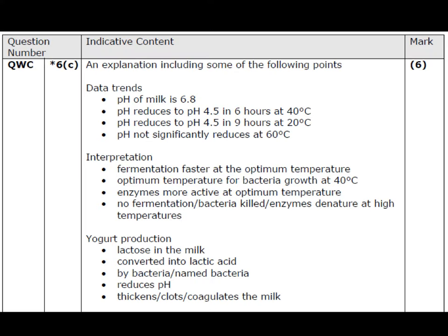We need to discuss data trends, interpretation, and yoghurt production. The starting pH is 6.8, and the pH reduces to pH 4.5 in 6 hours at 40°C, in 9 hours at 20°C, and it doesn't change at 60°C. Fermentation is therefore faster at the optimum temperature of 40°C — enzymes are more active at this optimum, meaning activity is higher. At 60°C there is no fermentation because the bacteria have been killed and enzymes denatured. We link this to yoghurt production: lactose in the milk is converted into lactic acid by lactobacillus bacteria. The lactic acid reduces the pH due to production of acid, which causes the milk to clot, thicken, or coagulate into yoghurt.